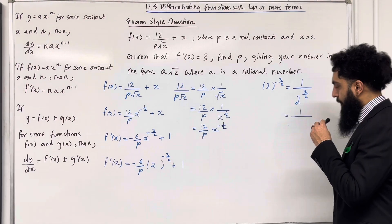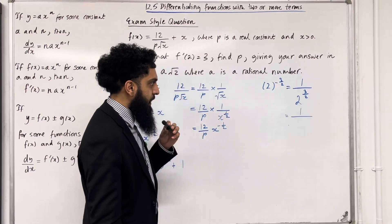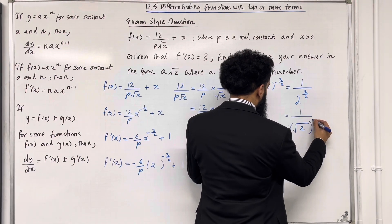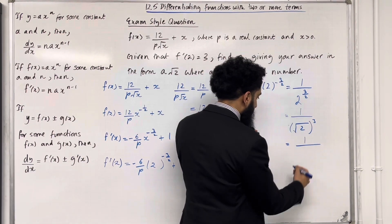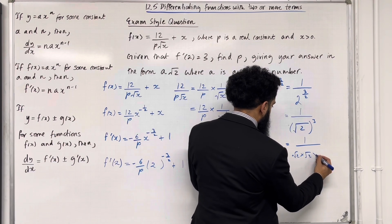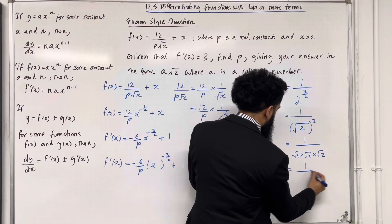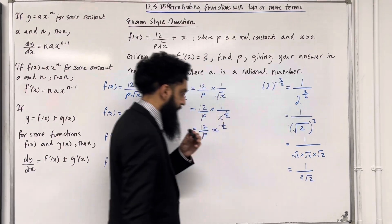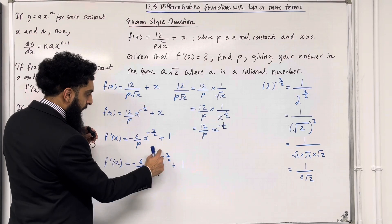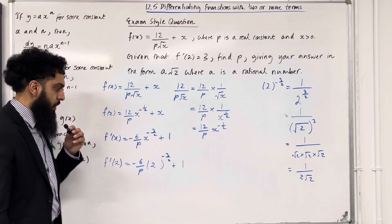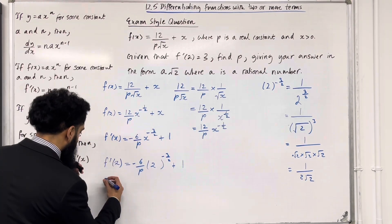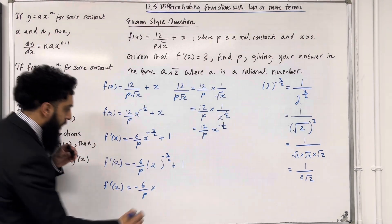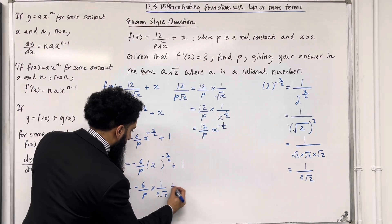2^(3/2) using laws of indices is the square root of 2 raised to the power 3, which is √2 × √2 × √2 = 2√2. So we can replace 2^(−3/2) with 1/(2√2). Therefore f'(2) = −(6/p) · 1/(2√2) + 1.